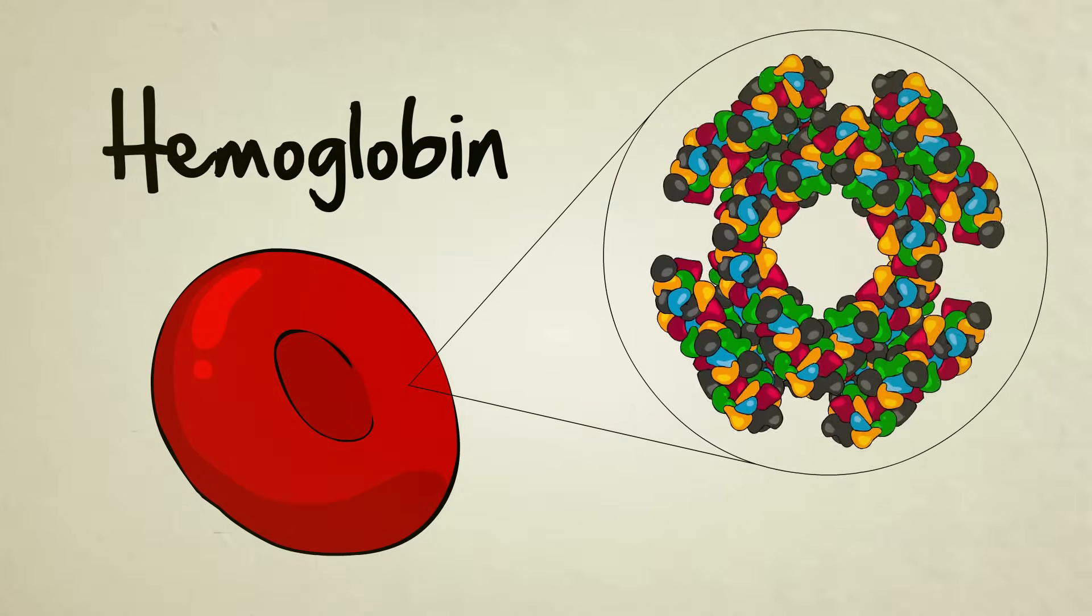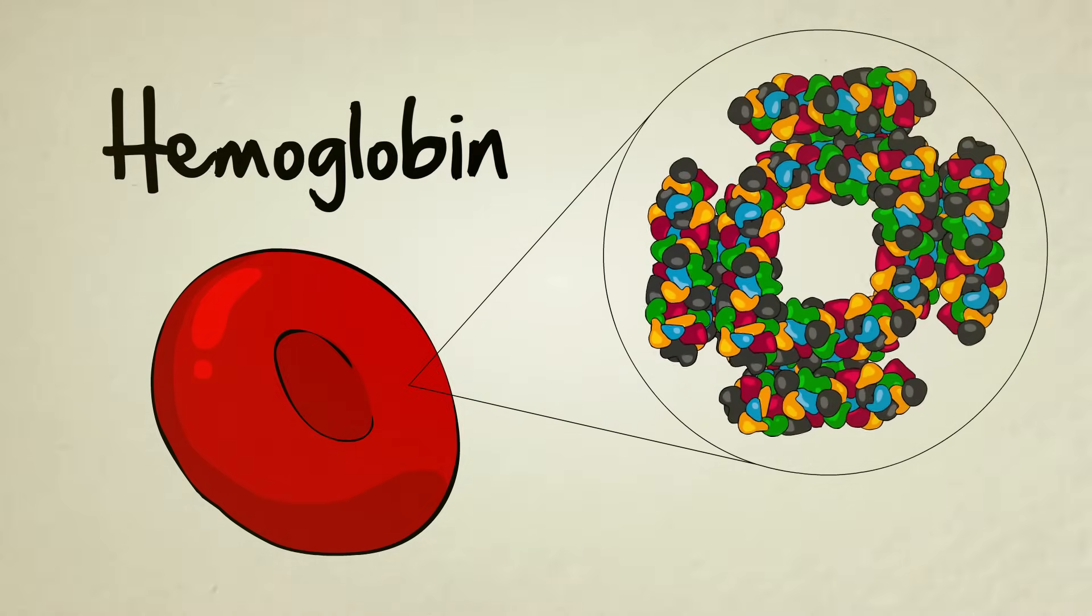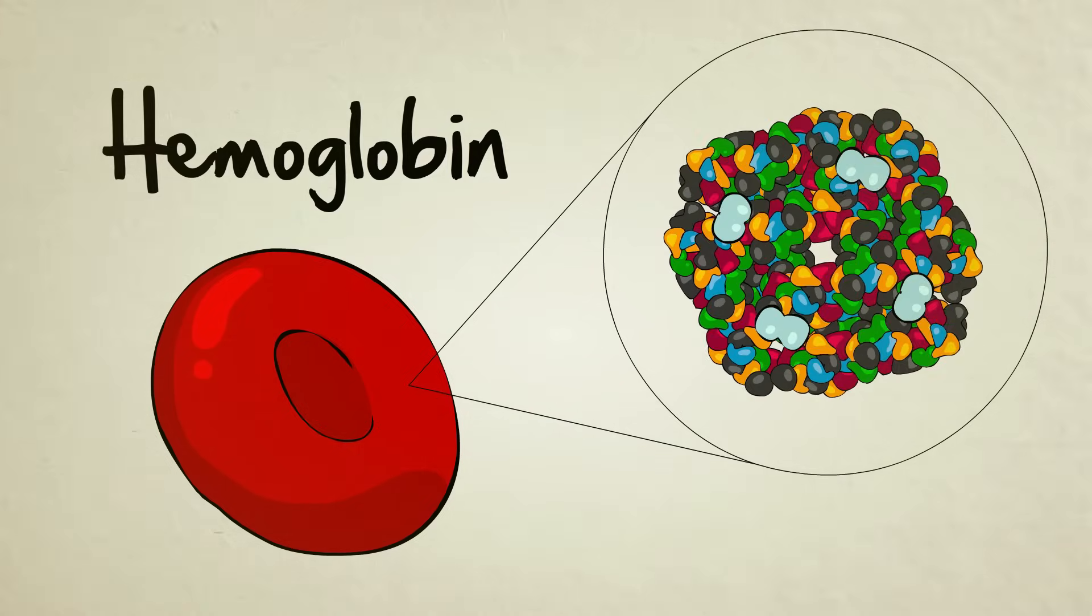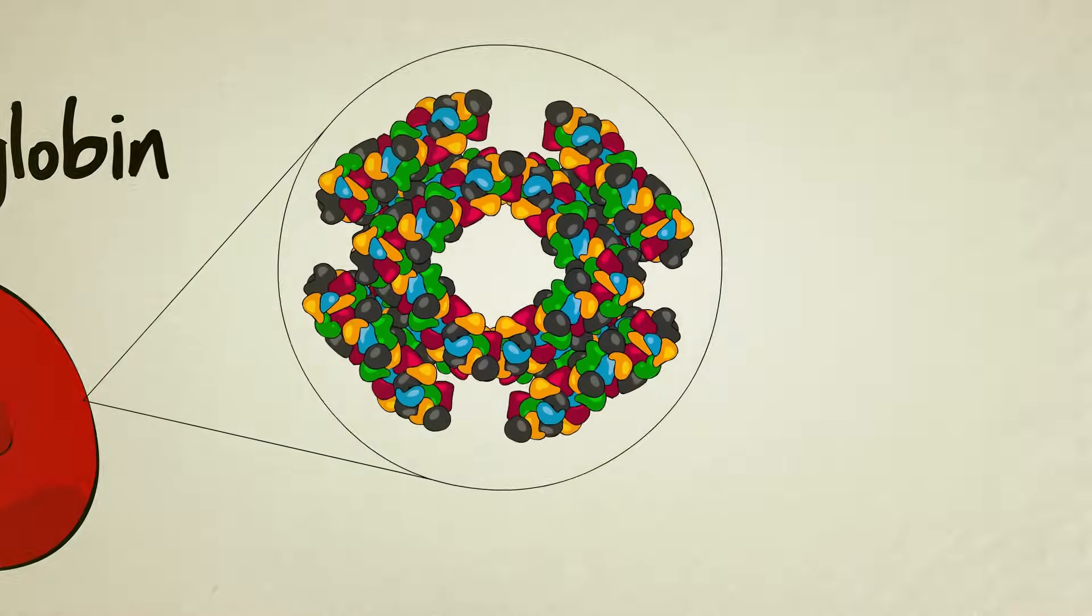Hemoglobin, for example, is a protein structure found in red blood cells. Its unique shape and size allow it to capture oxygen molecules when blood flows near the lungs, and then release them later when blood flows near oxygen-starved tissues.